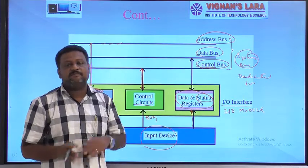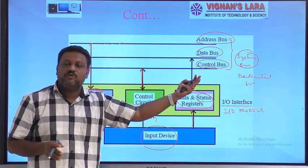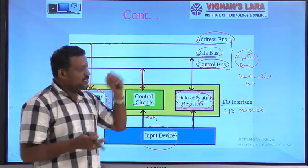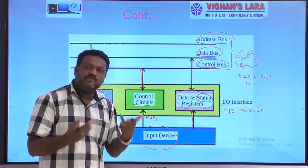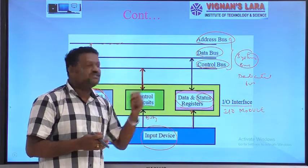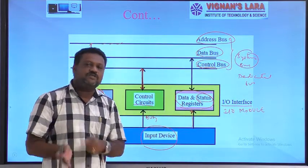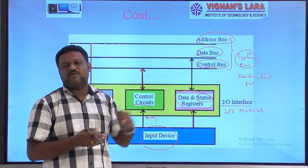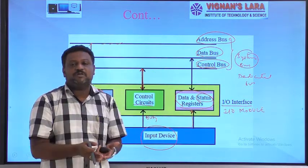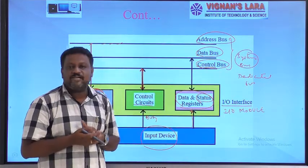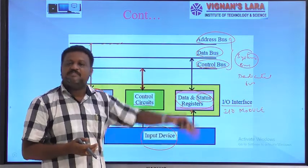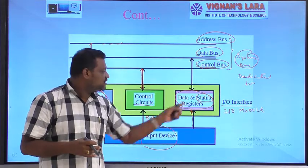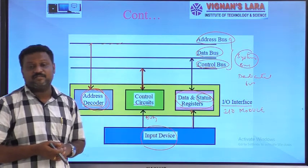Each I/O device has a pair of registers in the I/O module: a data register, through which data can be transferred to the processor via the data bus or received from the processor, and a status register that also acts as a control register. It receives commands from the processor via the data bus and sends back status information to the processor — acting as a status register in that case.